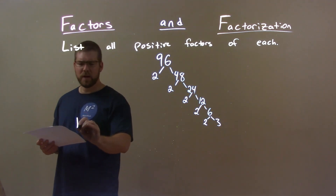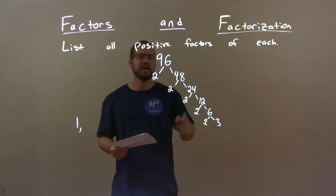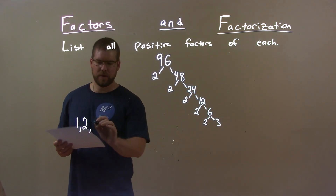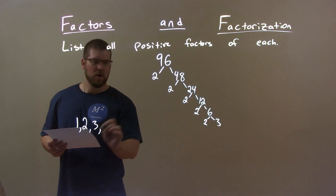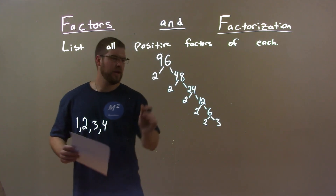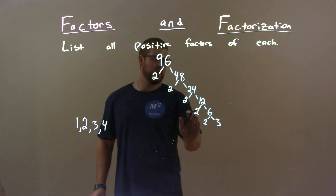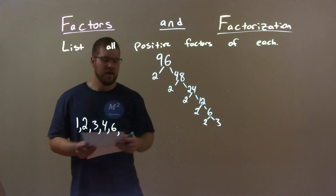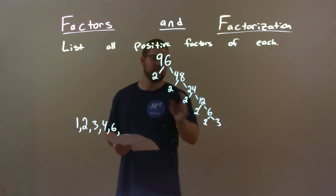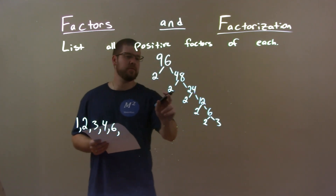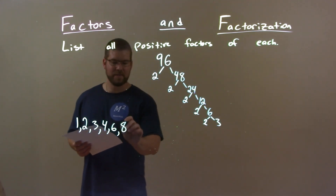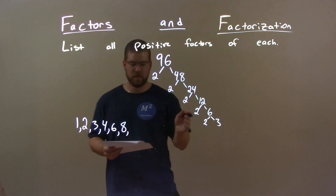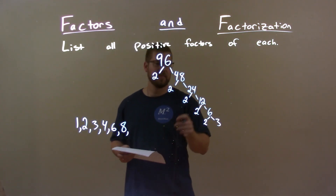So 1 is always going to be on our list. Then 2 is right there. And I see 3. 2 times 2 is 4. Nothing can multiply to be 5, but 6 — 2 times 3 is 6. Nothing can be multiplied to be 7, but 8 — 2 times 2 times 2 is 8. Nothing multiplies to be 9.